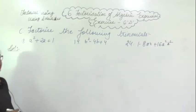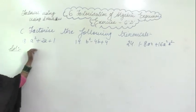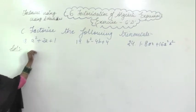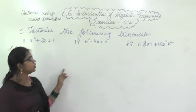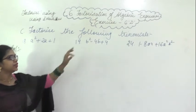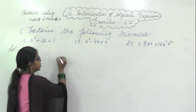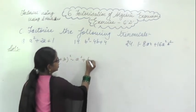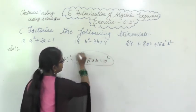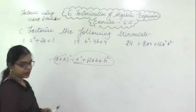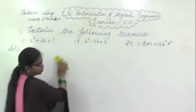This is question number three, the C portion — factorize the following trinomial. We have studied the (a+b)² and (a-b)² identities. Using these identities we have to factorize the following expressions. This will be given in the form of (a+b)² = a² + 2ab + b². From this, you have to find out the factorization. We will start with the very first question.